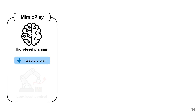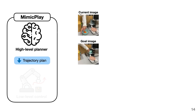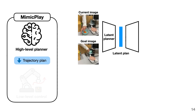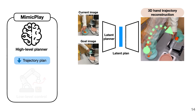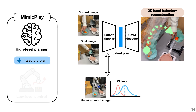More specifically, given the goal image and current observation, the high-level planner is trained using an encoder-decoder framework to reconstruct the 3D trajectory of a human hand. To handle the multi-modality of human motion, we use a Gaussian mixture model-based decoder network to reconstruct the trajectory. To bridge the visual gap between human and robot, we also implement a KL loss over the encoder feature embedding during the training process.